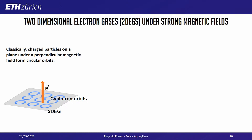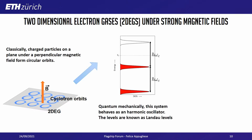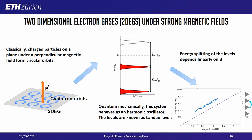Let's consider what happens when we take a bidimensional gas of electrons and apply a perpendicular magnetic field. Classically, the electrons will start to rotate because of the Lorentz force and form circular orbits with a very specific radius that depends on the applied magnetic field. Quantum mechanically, this system can be mapped into a harmonic oscillator. The levels are known as the Landau levels, and the spacing is the cyclotron energy, which has a linear dispersion with magnetic field.